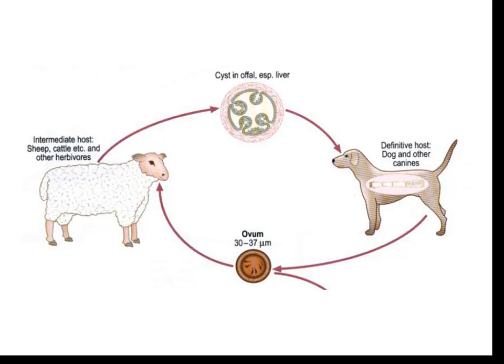When the cyst-containing offal, especially the liver, is consumed by dogs, the protoscolices present in the hydatid cyst reach the dog intestine. They evaginate to form an adult worm, which starts laying eggs again, excreted in the feces of the dog. This completes the life cycle of Echinococcus granulosus.